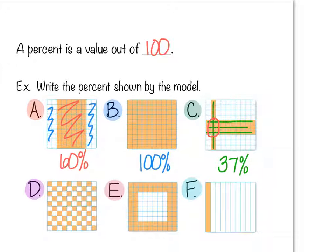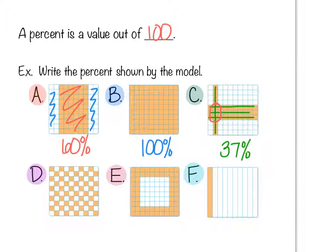It's easier to think of them as rows rather than counting all individual squares. In example D, it looks like every other square is shaded like a checkerboard, so this would be 50 percent shaded.